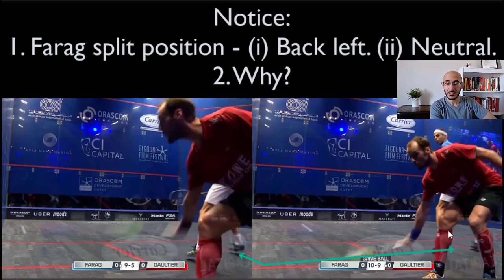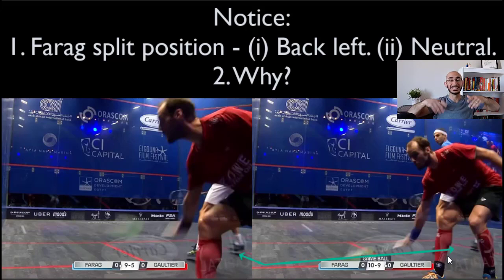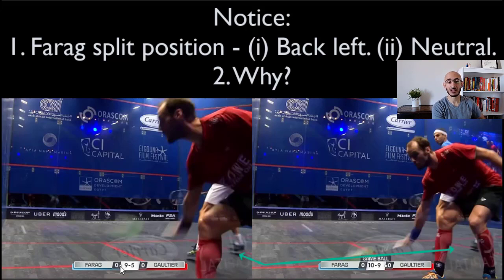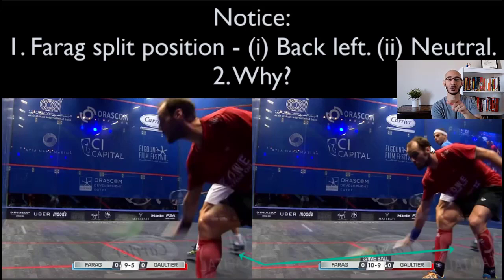Now on the right, you notice Farag's split step is not nearly as staggered — it's more neutral because now he's seen the backhand drop. And presumably it happened again between 9-5 and 10-9. So Farag's brain has registered that he can't just go to the back — he has to cover the back and the front, which is why he's more neutral with his split step.